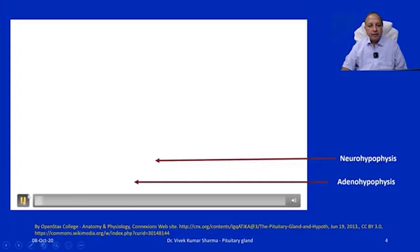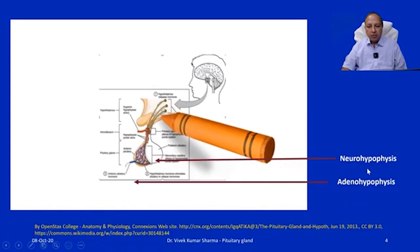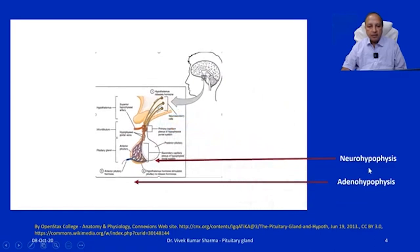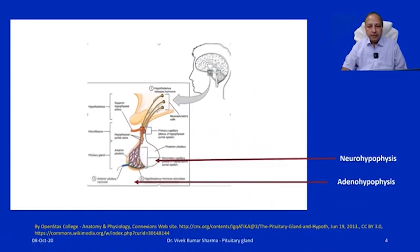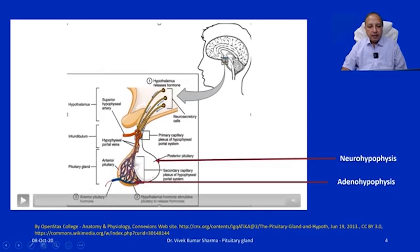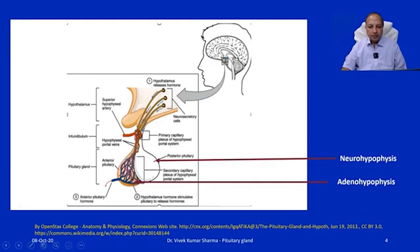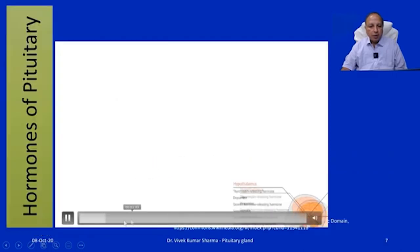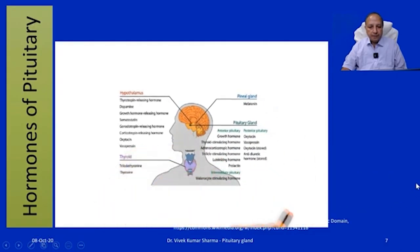Looking at the structure of the adenohypophysis and neurohypophysis, there is distinct control coming from the hypothalamus. The anterior pituitary is connected to the hypothalamus via the capillary plexus of the hypophysial portal system through blood vessels. The posterior pituitary is connected to the hypothalamus via neural stalks — a neural connection.